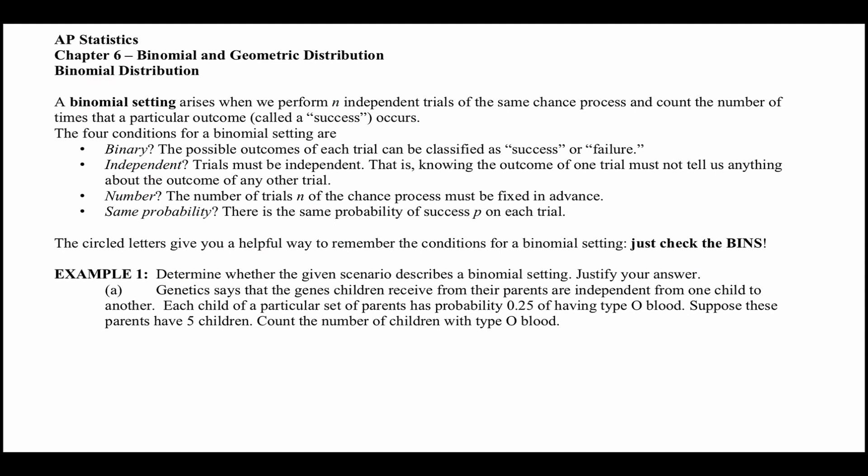They all have certain things in common. So we're going to start with binomial. What is binomial distribution? A binomial setting arises when we perform n — a number of independent trials of the same chance process. In order for it to be considered binomial distribution, it has to follow four conditions. The first one is binary. Binary means one or two things can happen.